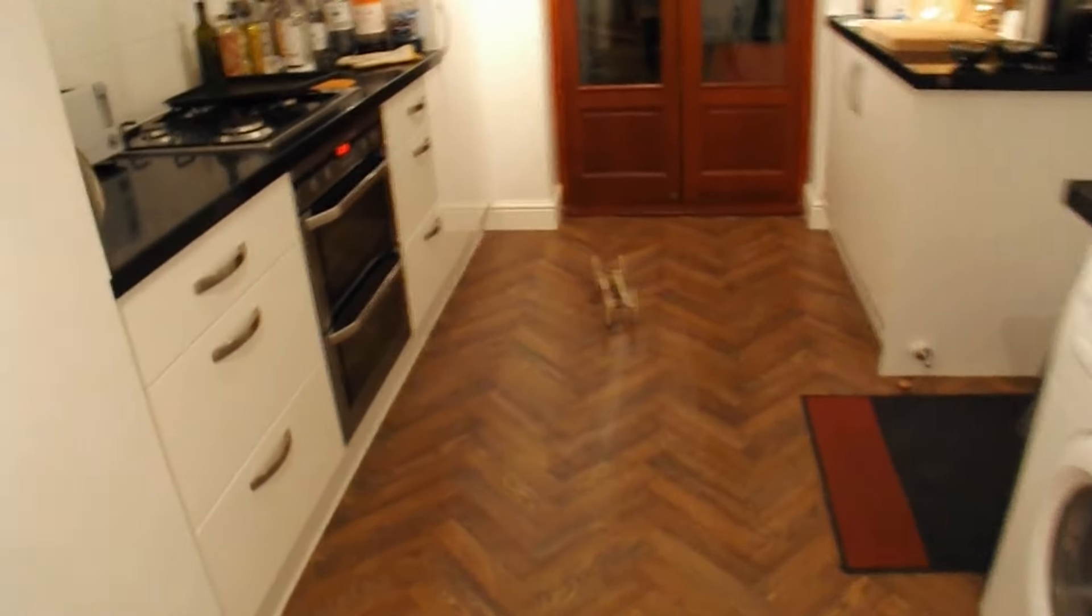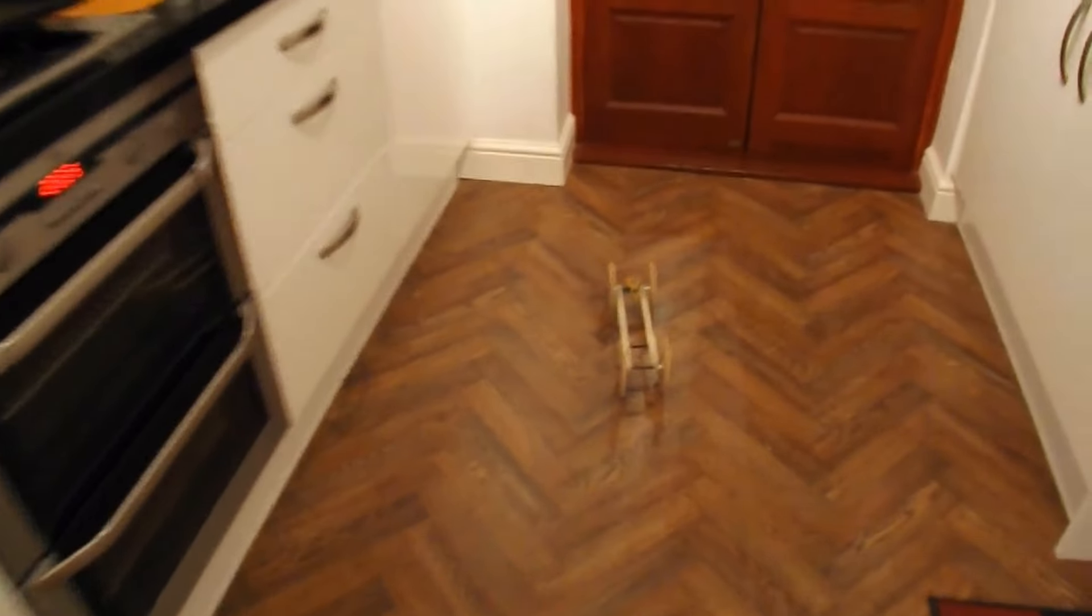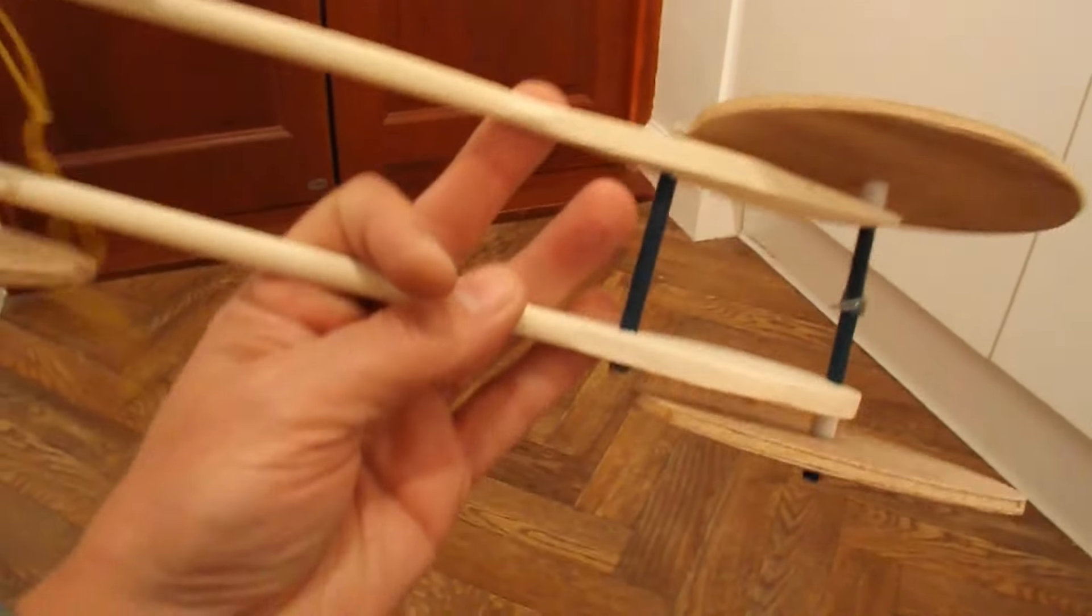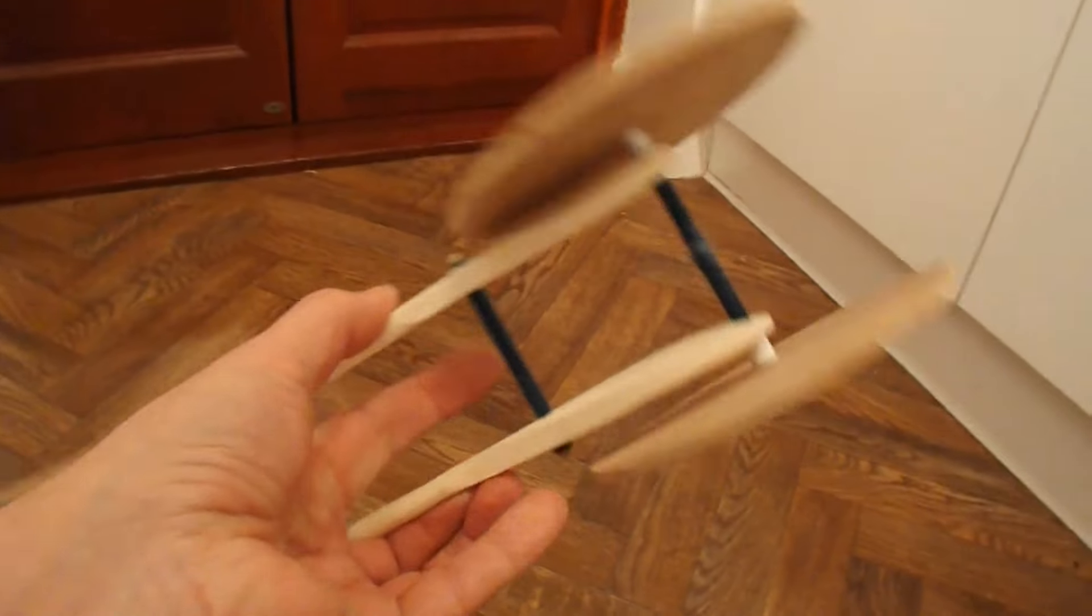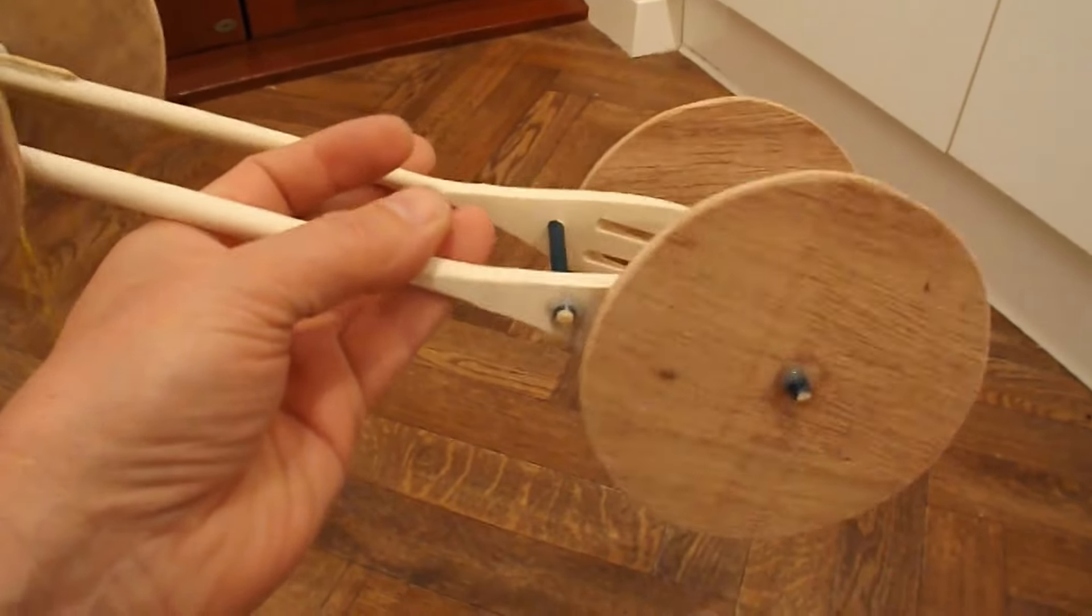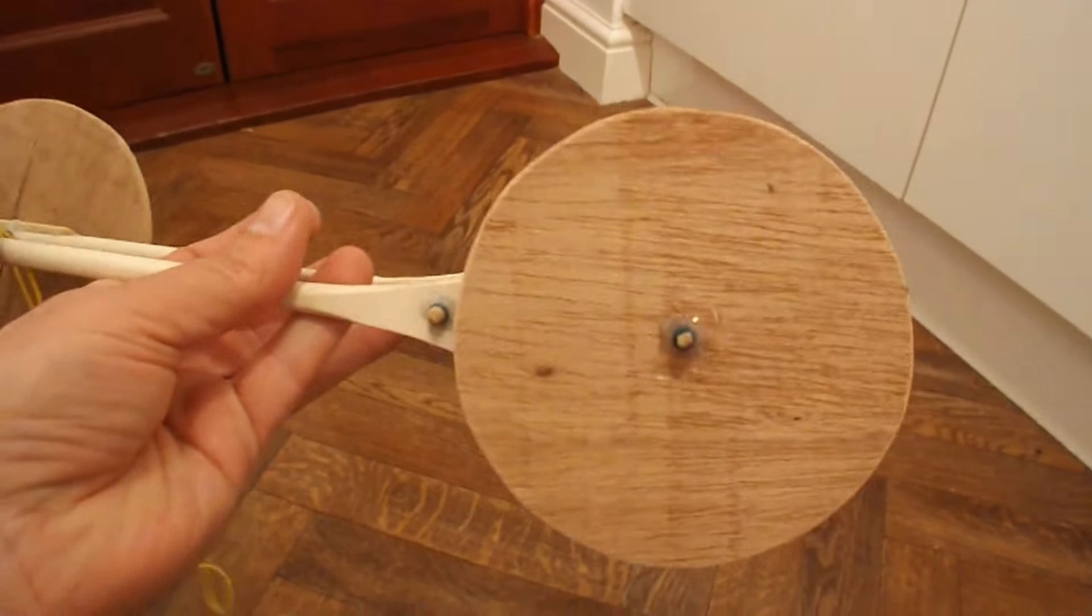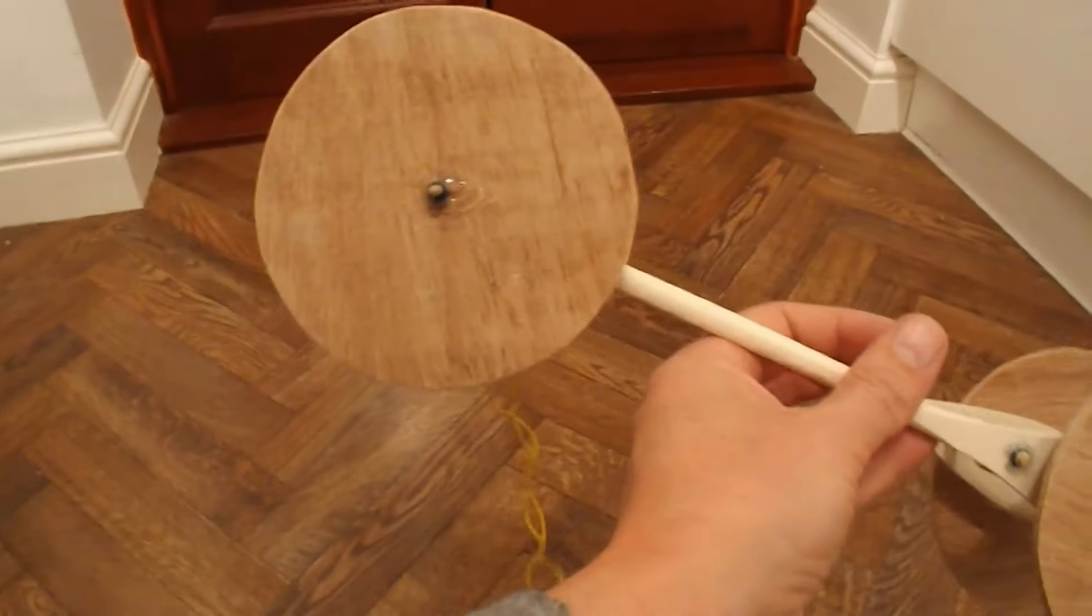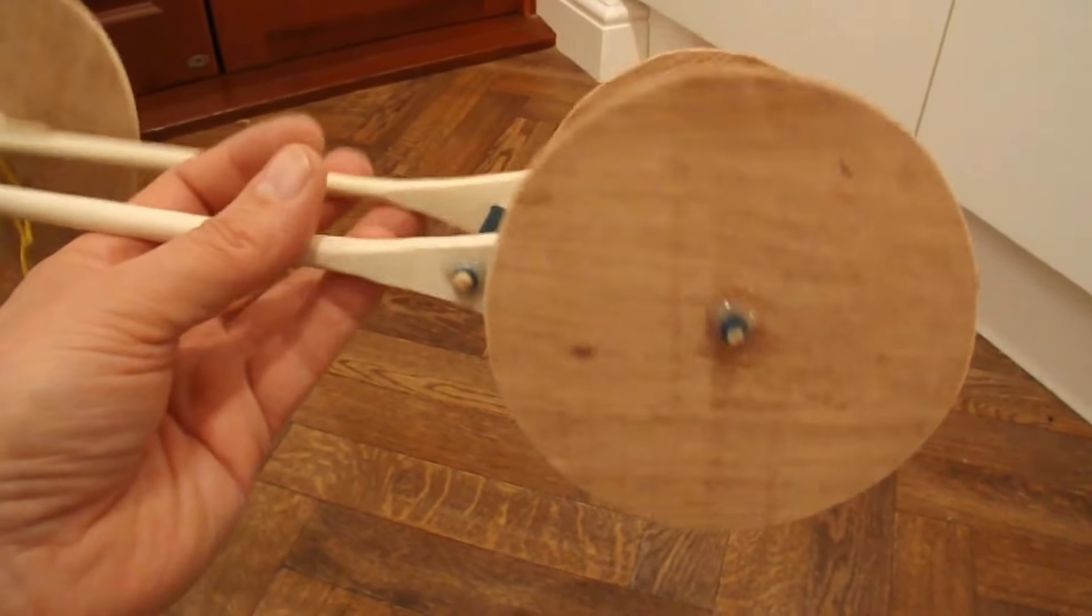Made out of wooden kitchen utensils, basically two spoons or a spoon and a spatula, and I made the wheels out of wood as well. We'll now go and put the mousetrap in place and make it into a mousetrap car.